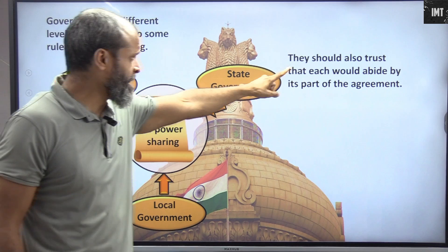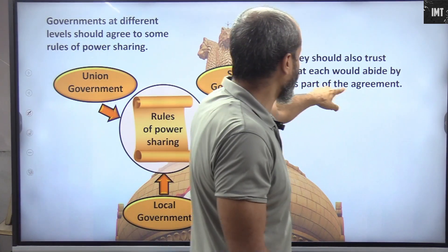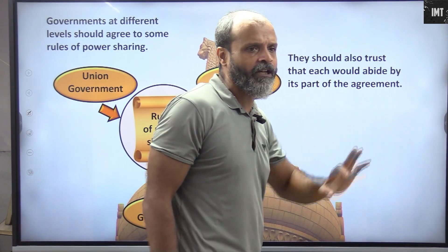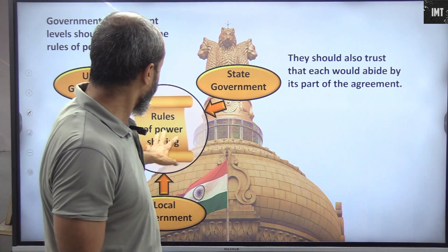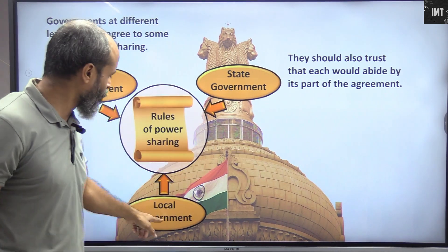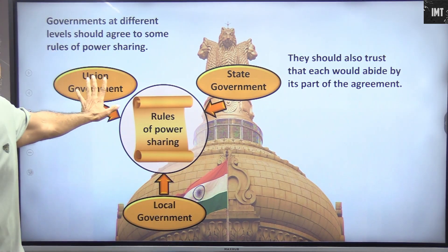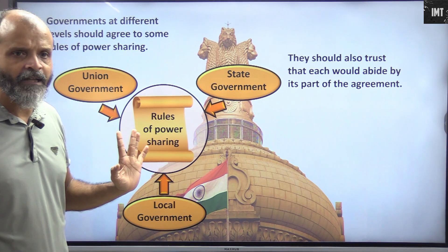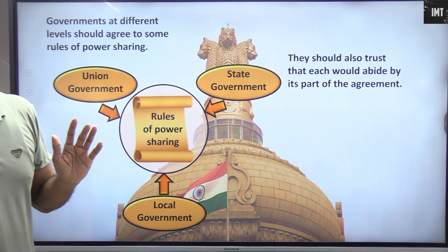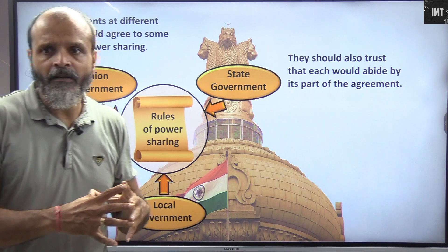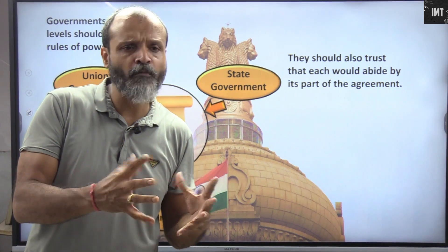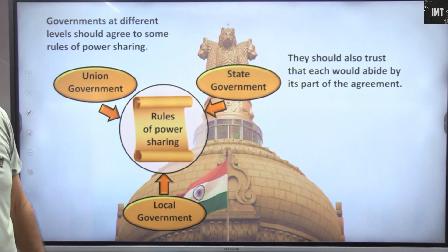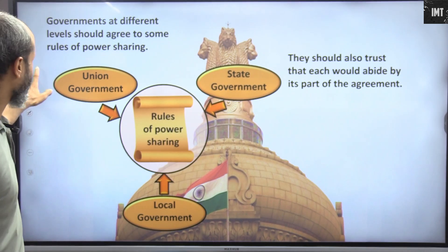They should also trust that each would abide by its part of the agreement. The state government should let the union government do its work, and vice versa. Let them do their work as per their scope and jurisdiction — there must be mutual trust between them.